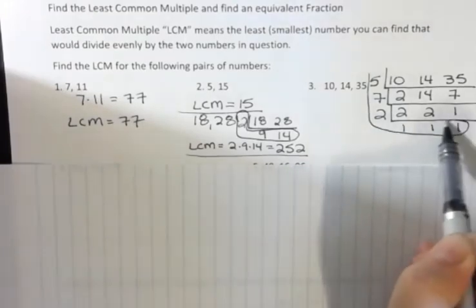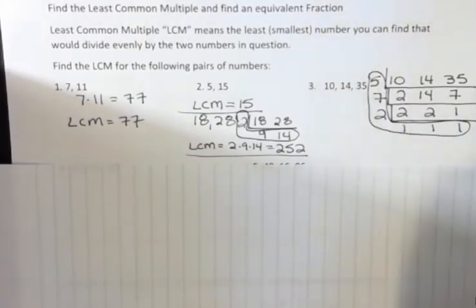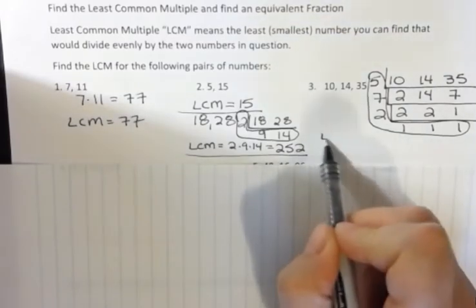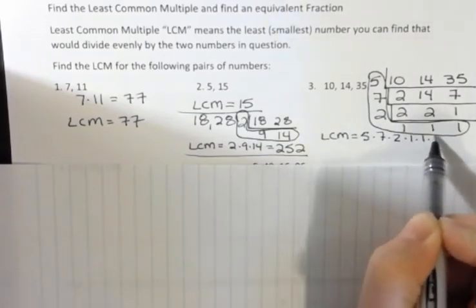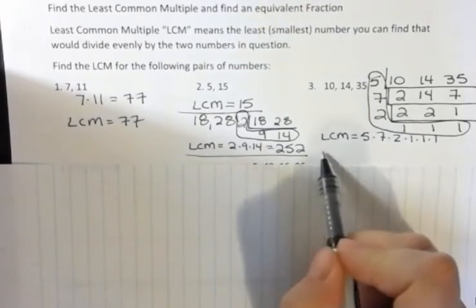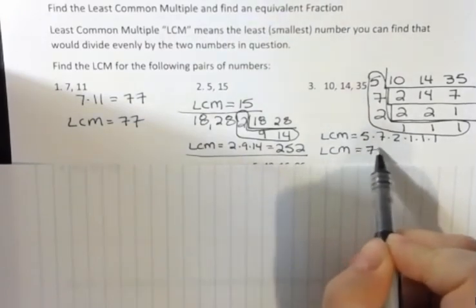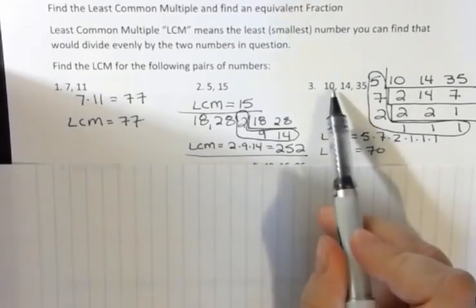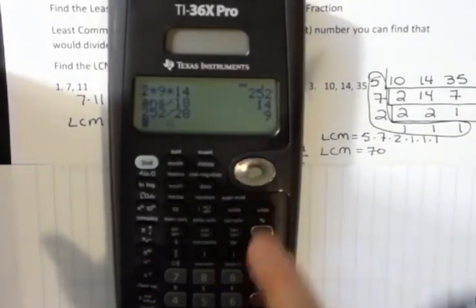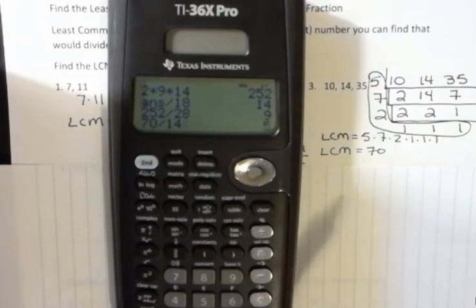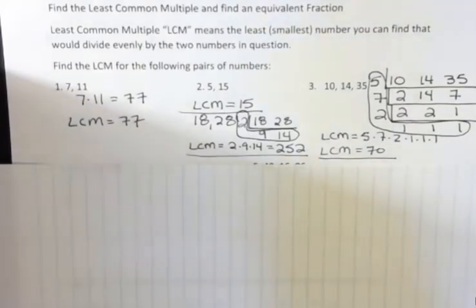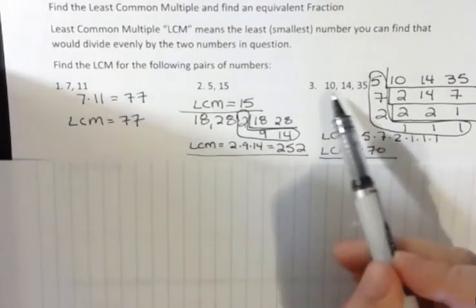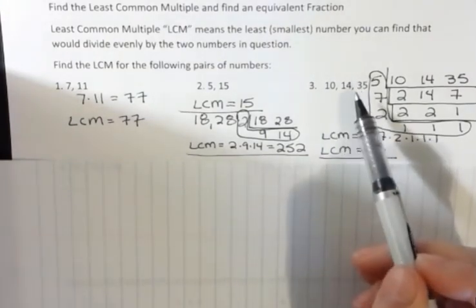My LCM is everything in the L. Now multiplying by one doesn't change anything, so I don't really need to multiply by all those ones, but just for our purposes, I'm going to write it out. Five times seven times two times one times one times one, and that equals seventy. So then you say, well, is that true? Does ten go into seventy? Yes, seven times. Does fourteen go into seventy? Seventy divided by fourteen is exactly five. And what about seventy divided by thirty-five? That's two. So this is my LCM. That's the least number that I can find that has all of these numbers as factors. In other words, they all divide evenly into seventy.